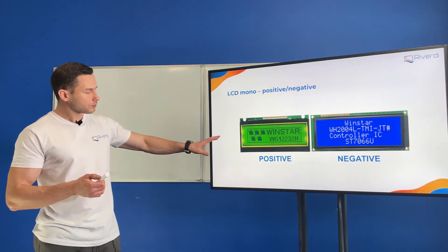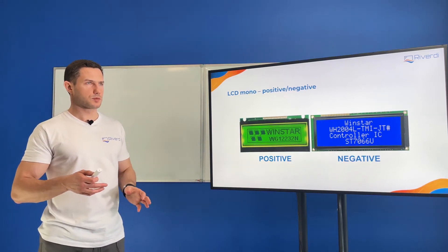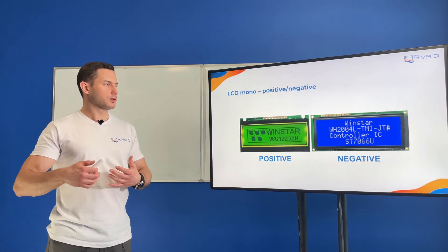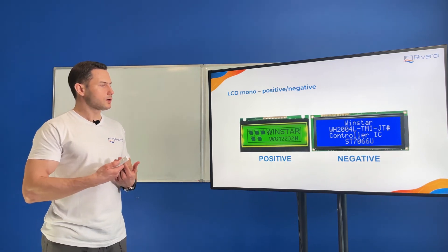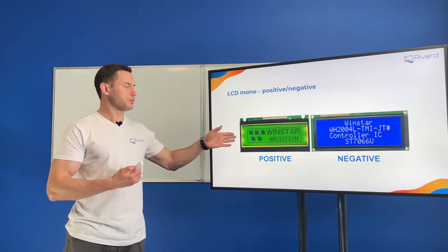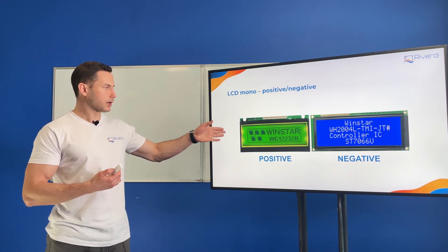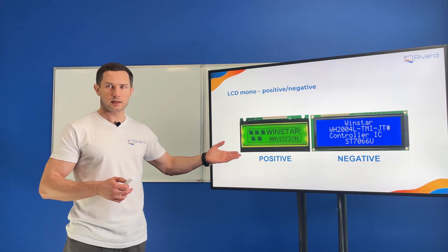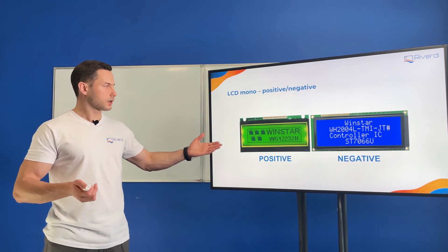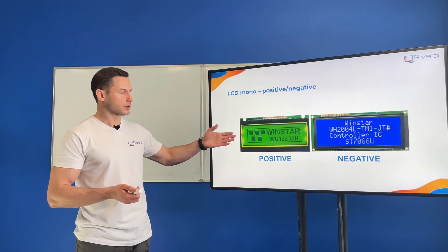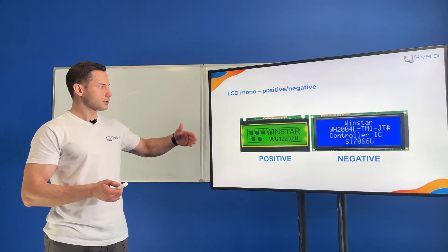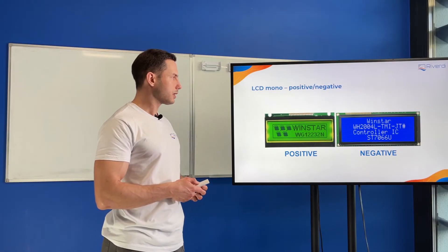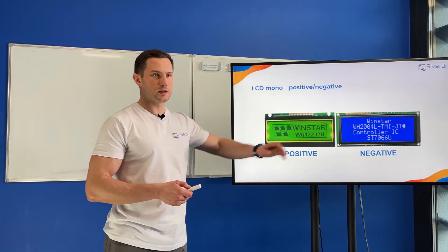Positive and negative displays each have their use cases. With a positive display, you can use it in a regular environment with ambient light and you don't need the backlight — it's possible to switch the backlight off and still see the image. Like a calculator, which is a reflective or transflective display — we'll talk about that later.